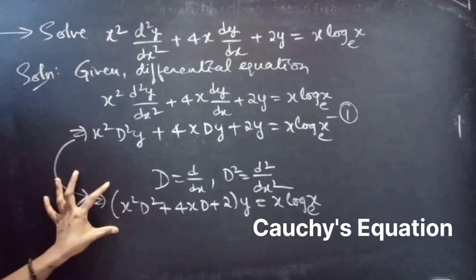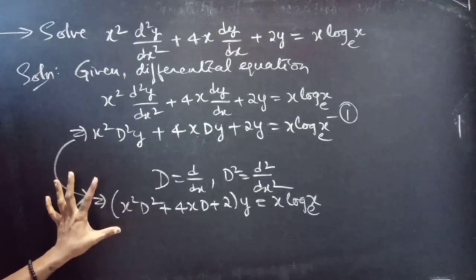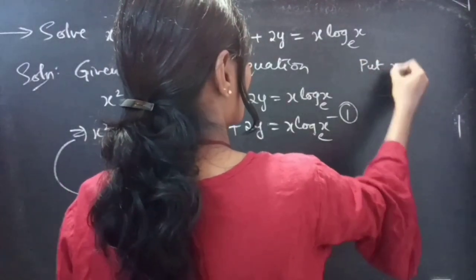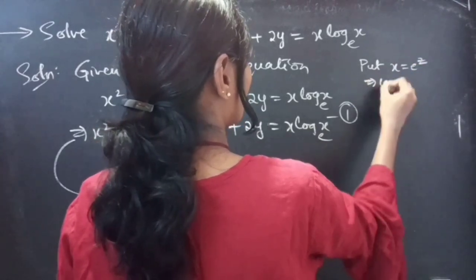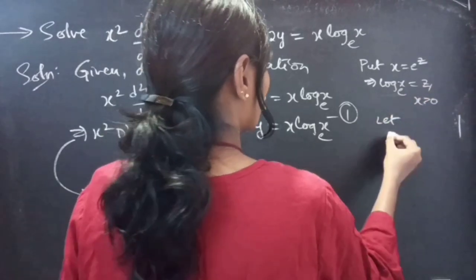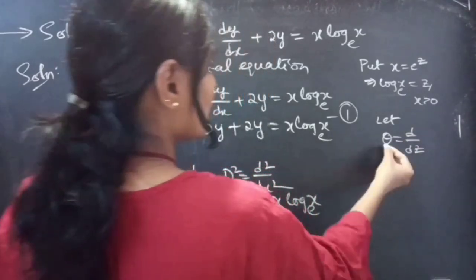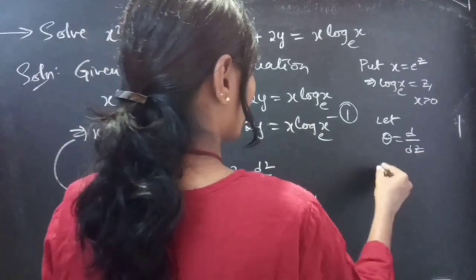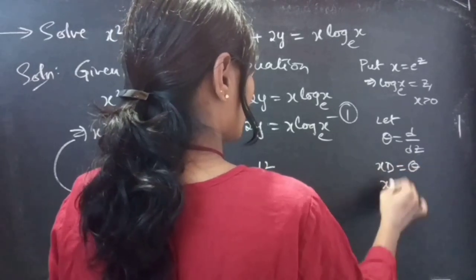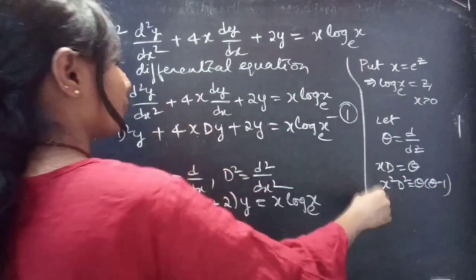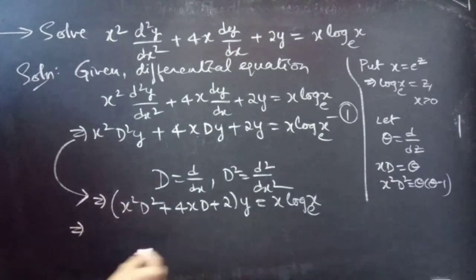Now, take y common from all three terms of the LHS: (x²D² + 4xD + 2)y = x log x to the base e. We will reduce this to a differential equation with constant coefficients by putting x = e^z. Then log x to the base e equals z, for x > 0. Let θ = d/dz, where θ is a differential operator and z is the independent variable. Then xD = θ and x²D² = θ(θ − 1). Consider this as equation 2.